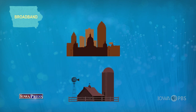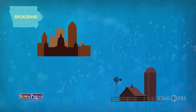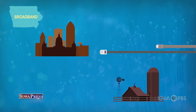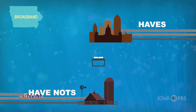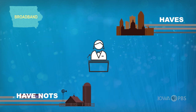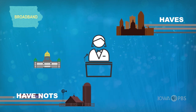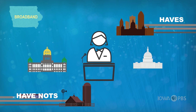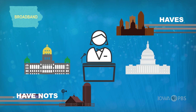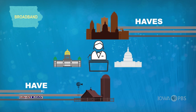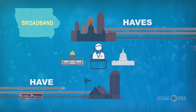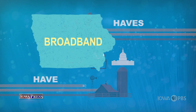That access divide is split quite clearly into Iowa's cities and towns being the haves, and the rural areas being the have-nots. But with the governor's efforts and strong funding from both state and federal legislation, that imbalance is slowly starting to level out.